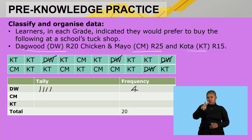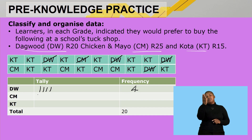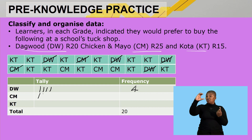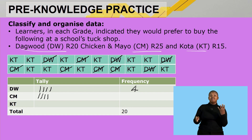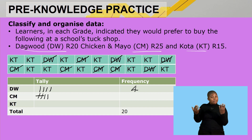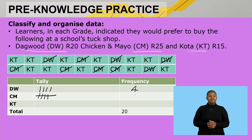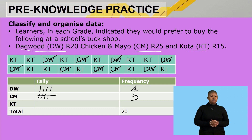Next we have chicken and mayo. We cancel out each chicken and mayo entry and record it in the tally. After four strokes, we make the fifth stroke across those four to form a bundle of five, and we write five in the frequency column.